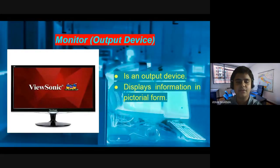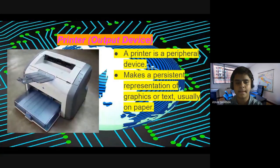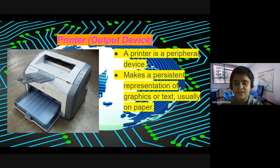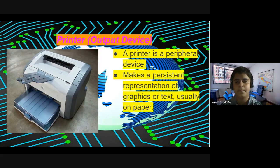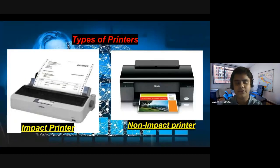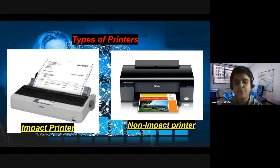The monitor is an output device that displays information in pictorial form. The printer is also an output device - it is a peripheral device which makes a persistent representation of graphics and text, usually on paper. There are two types of printer: impact printer and non-impact printer.